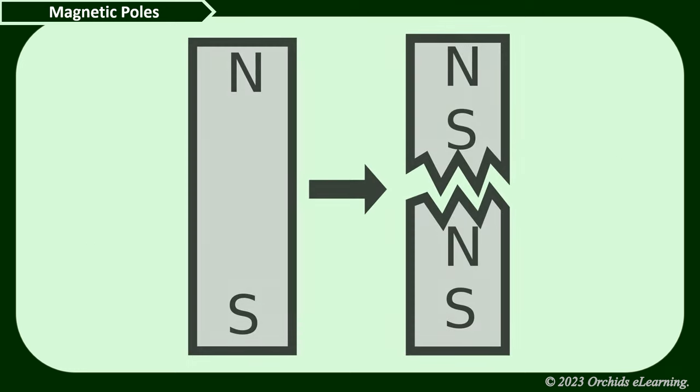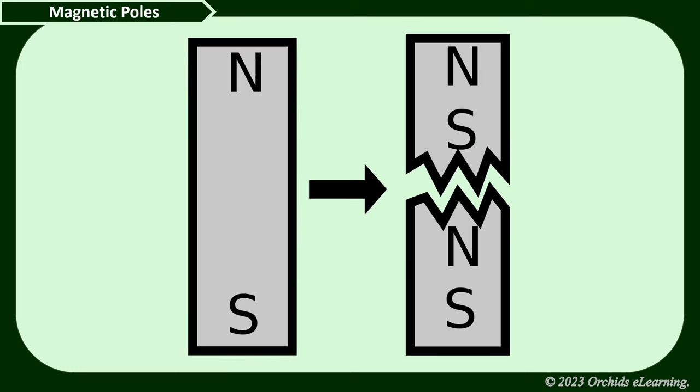If we break a bar magnet, we would get two pieces, each having a north pole and a south pole.